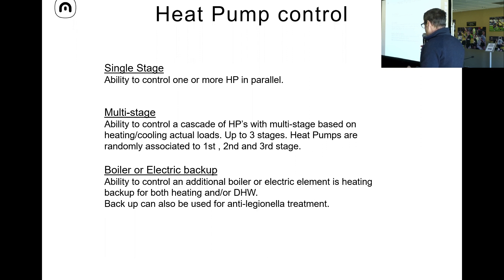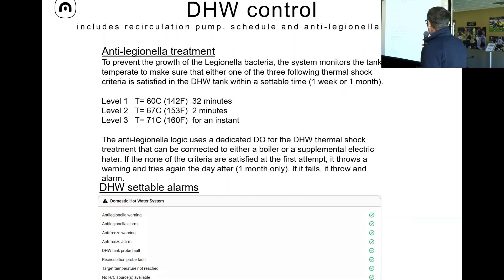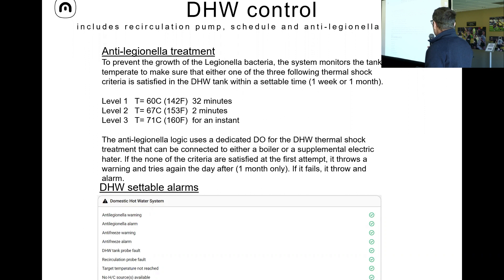We can also control a backup for heating — either a boiler or an electric backup. This is particularly useful when doing domestic hot water with a heat pump, and also for anti-legionella treatment, which kills the legionella bacteria. The anti-legionella treatment is based on three different criteria of temperature and how long the temperature is held. These three criteria kill the legionella bacteria and can be done every week or every month — here in New Zealand it's required to be weekly.